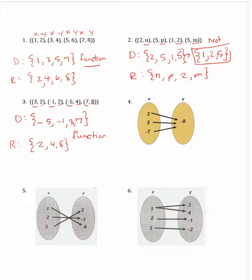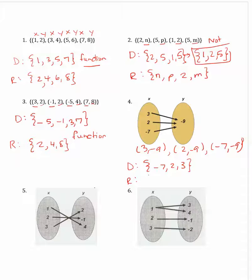Example 4 is a mapping where it shows the x-coordinates mapped to the y-coordinates, so we can create ordered pairs by following the arrows. The ordered pairs would be (3, negative 9), (2, negative 9), and (negative 7, negative 9). So the domain is the set of the numbers negative 7, 2, 3, and the range is just negative 9. This is a function since the x-coordinates are all unique.